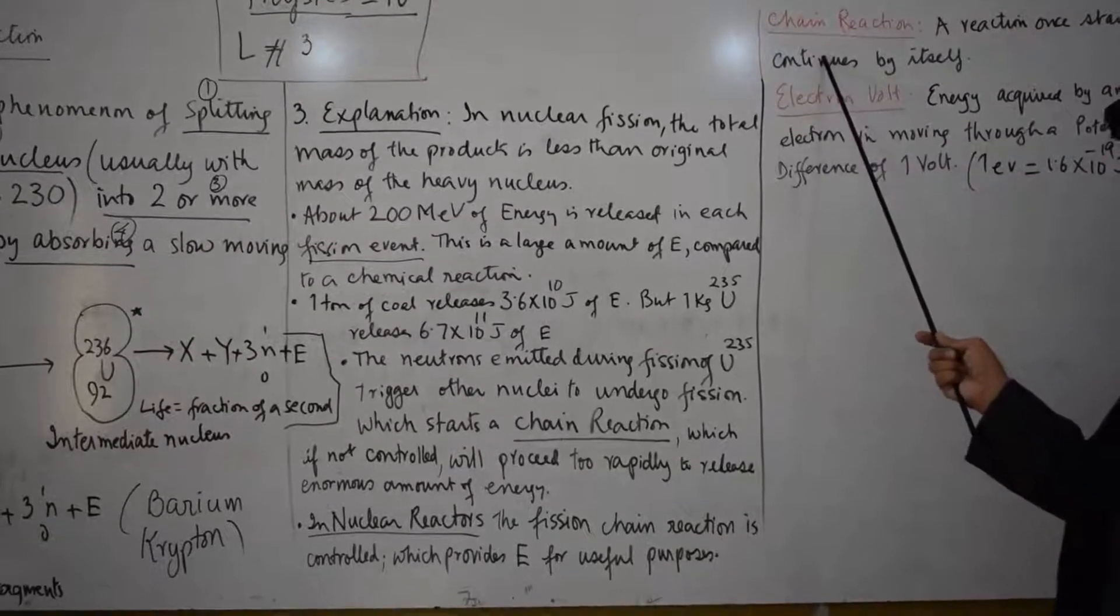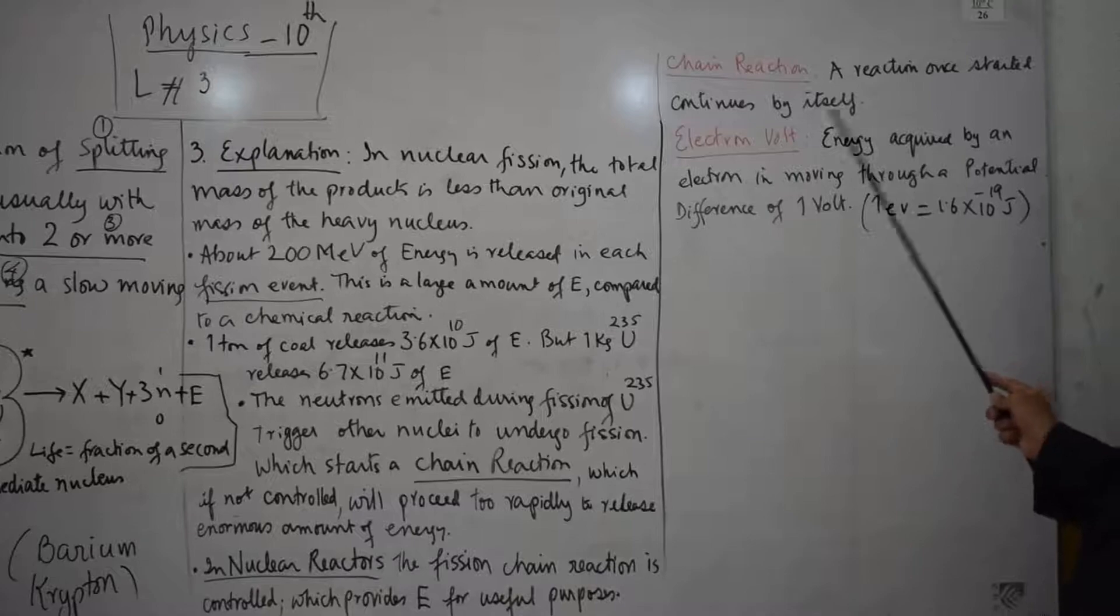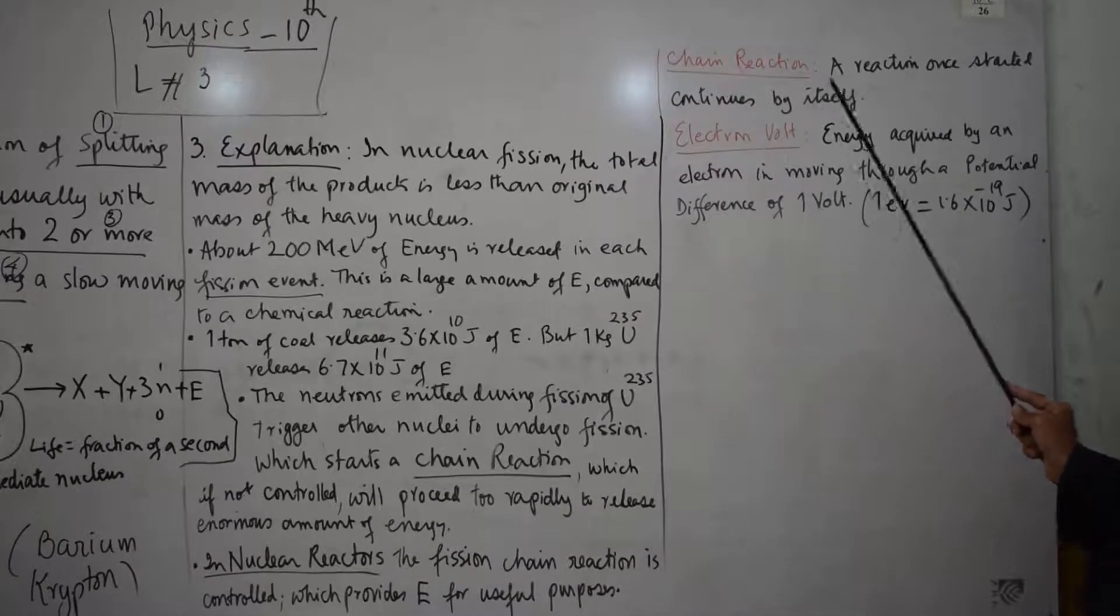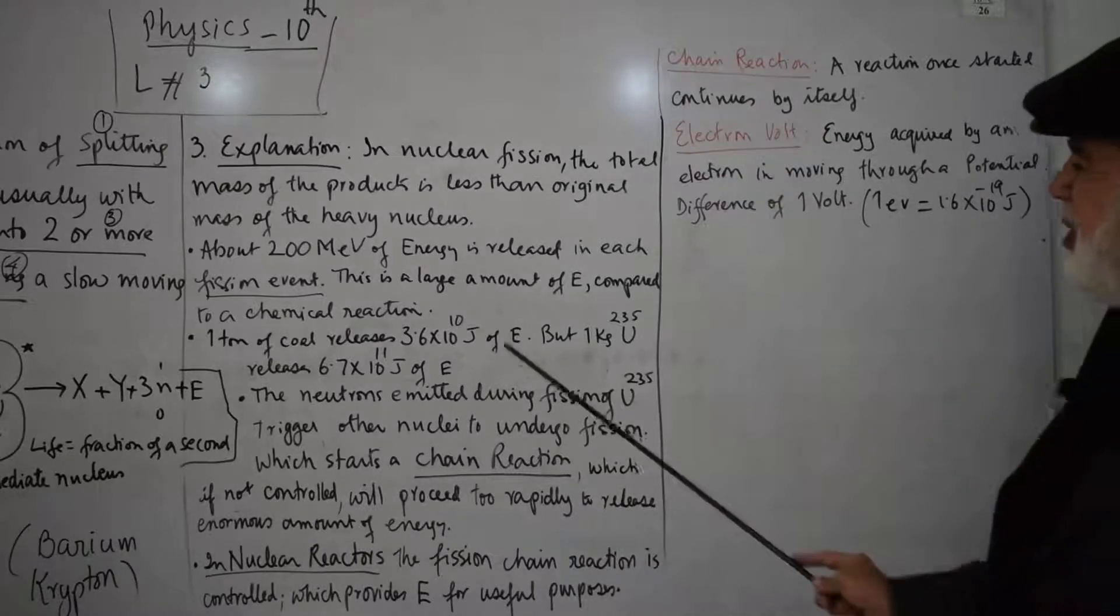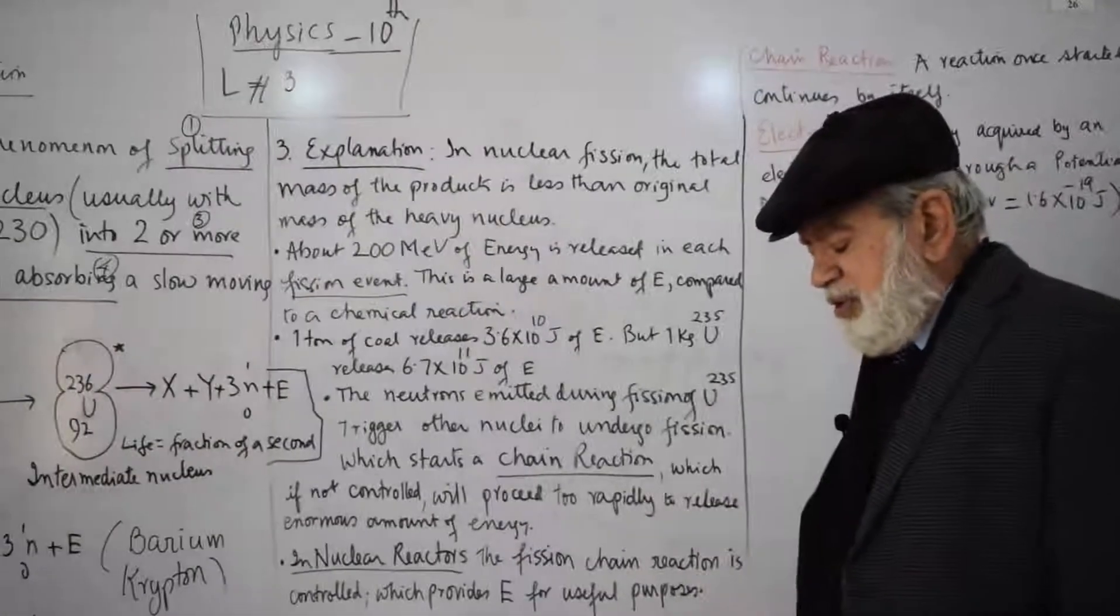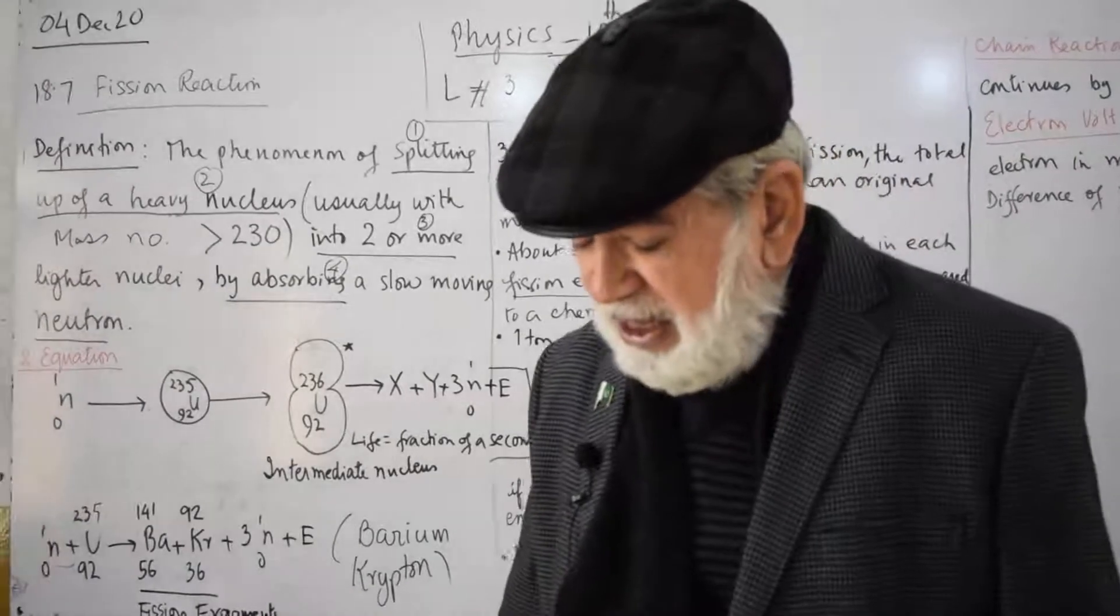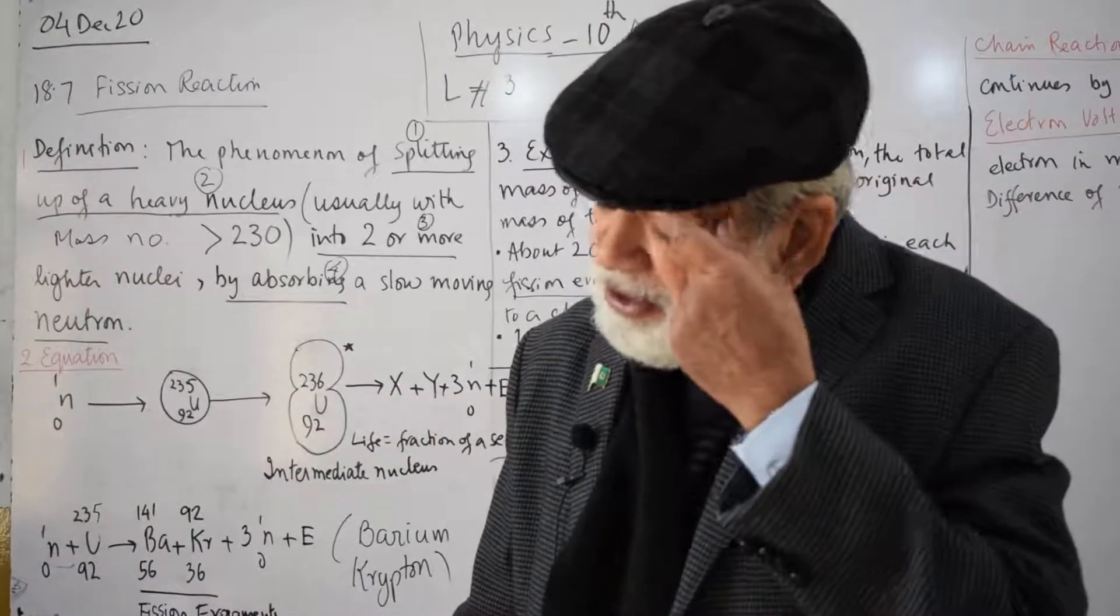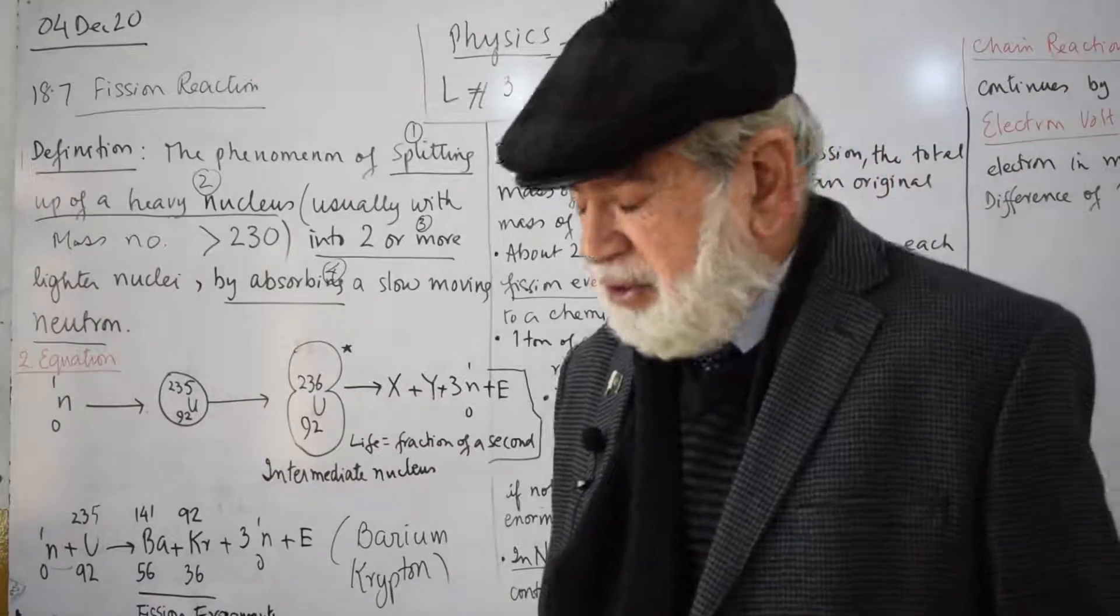A chain reaction that once started cannot be controlled continues by itself. Electron volt is the energy acquired by an electron in moving through a potential difference of one volt. I hope this is clear. You will make an assignment of it and send it to me by WhatsApp. If there are any questions, please talk to me on WhatsApp number. Thank you.